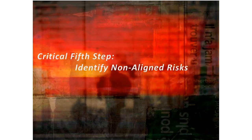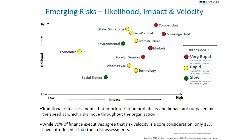We need to consider what I call non-aligned risks. These are emerging risks we don't necessarily see or control, and they have velocity. If you look at risk velocity, it's a concept many organizations are beginning to examine; unfortunately, very few have introduced it into their risk assessment. In fact, 70% of finance executives agree that risk velocity is a core consideration, yet only 11% have introduced it into their risk assessment. Competition is the biggest threat to business today — it puts businesses out of business faster than any natural disaster.